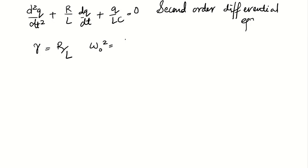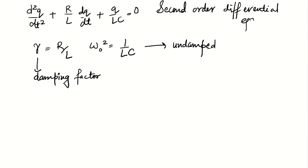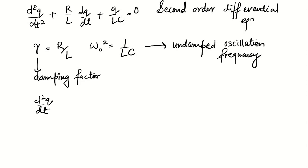Let's move to the next page. We define gamma as R over L and omega naught squared as 1 over LC. Gamma is the damping factor, because here the resistance is acting as a damping force. If our resistance goes to zero, then omega naught will be our undamped oscillation frequency. Let's rewrite this differential equation in the form of gamma and omega naught.